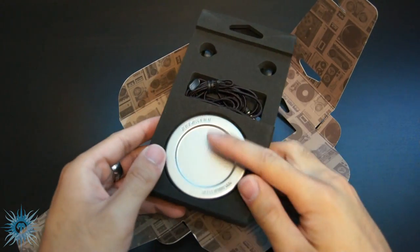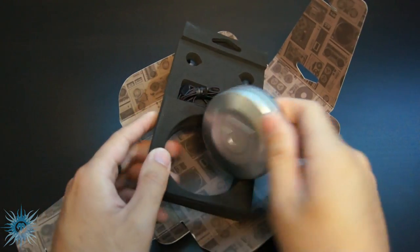Underneath that are the earphones themselves, but we'll finish off with the accessories first, and the last piece is this storage tin.